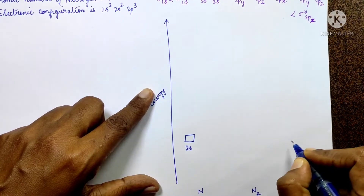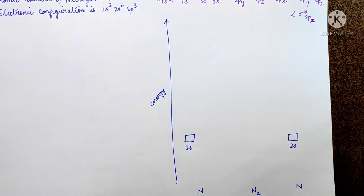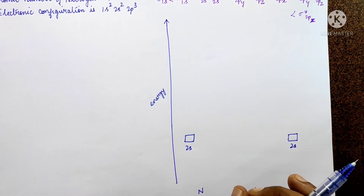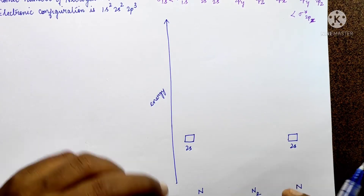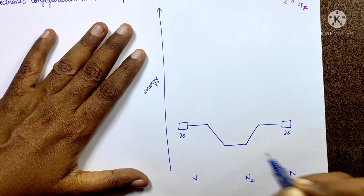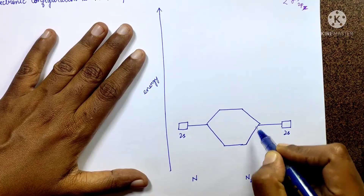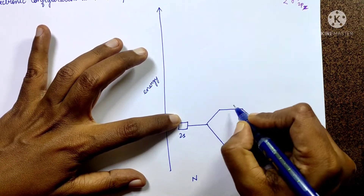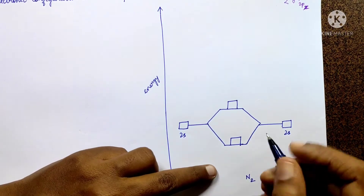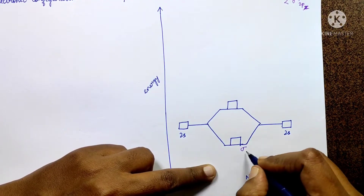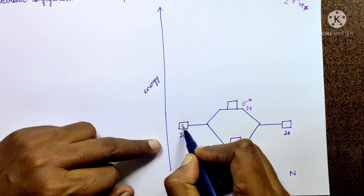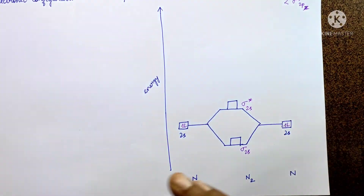Now looking at the 2s level: two atomic orbitals mix to give two molecular orbitals — one of lower energy and one of higher energy. The lower energy orbital is sigma 2s (bonding), and the higher energy orbital is sigma* 2s (anti-bonding). Electrons are then filled into these orbitals to complete that part of the diagram.